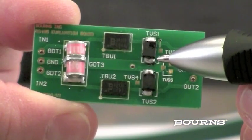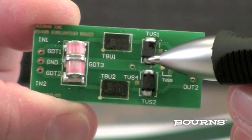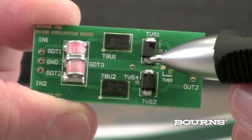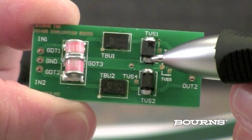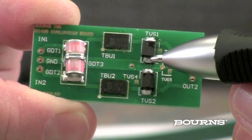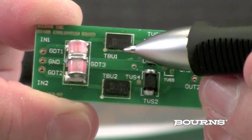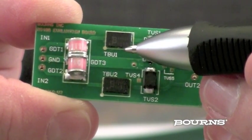The TVS diode provides a very tight voltage clamp to protect the sensitive driver-receiver from transients, ensuring the signal will not exceed the maximum device limits found on the datasheet.